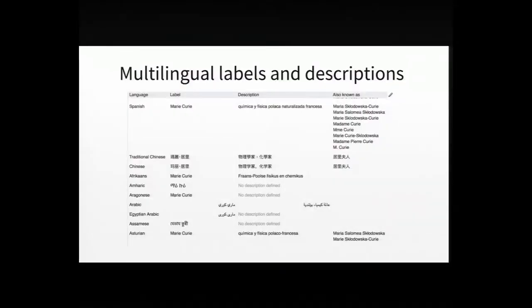If you drill down into the anatomy of an item, you'll see a few important features of Wikidata. First, multilinguality. All items are identified by a Q number, but to make them human readable and accessible to people in different languages, they also have labels and descriptions that localize information across a variety of languages. This is what the entry for Marie Curie looks like across a sample of languages.